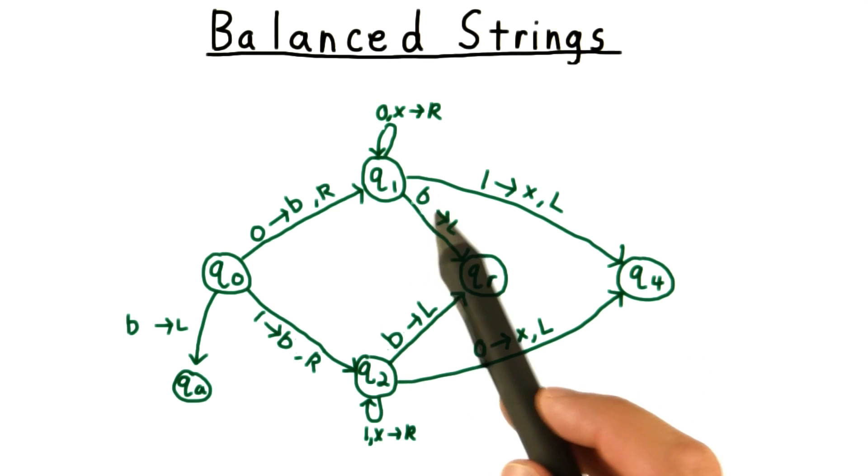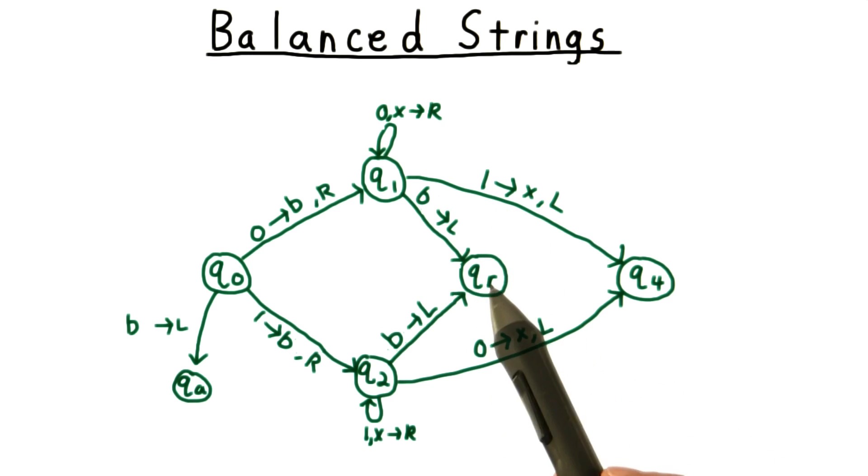On the other hand, if we encounter a blank instead of a 1, then we reject. There were no 1's to match. Or in this case, if we're looking for a 0 and encounter a blank instead, that means that there's no 0 to match.